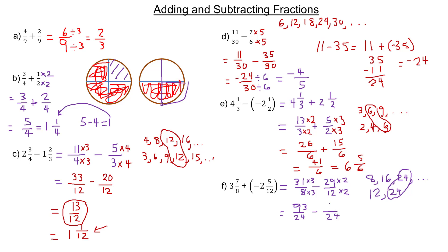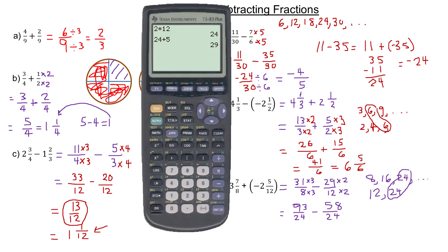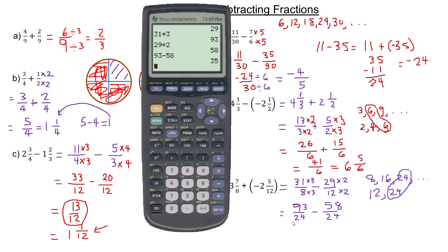Twenty-nine times two is 58. You want to check to make sure those are right: 31 times three is 93, and 29 times two is 58. So we want to subtract them: 93 minus 58. In the numerator, I'm going to have 35. So we would have 35 twenty-fourths.